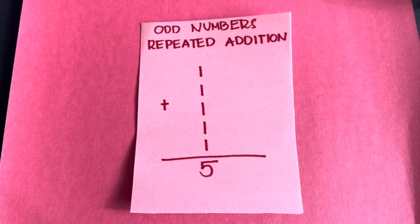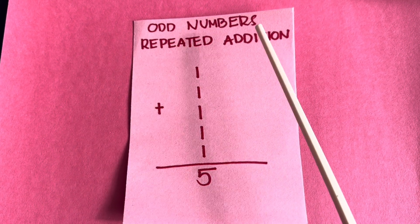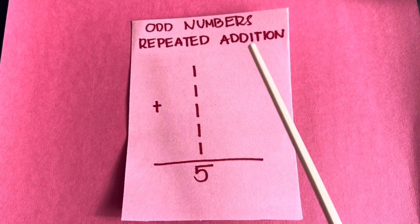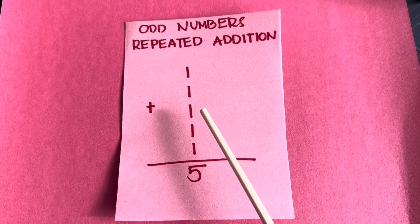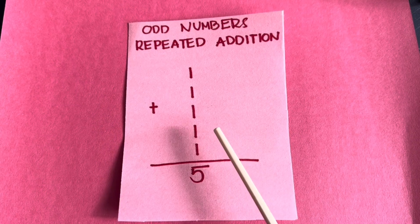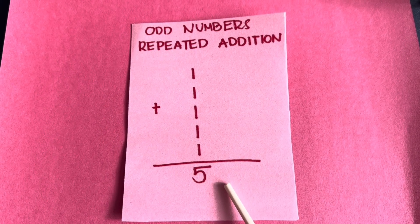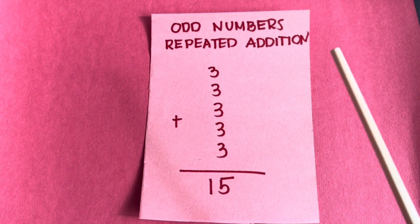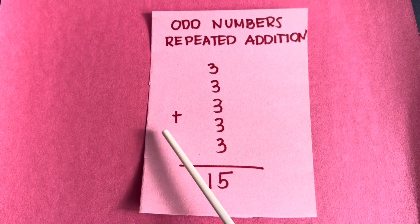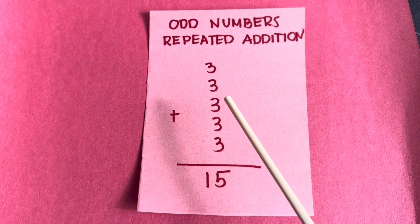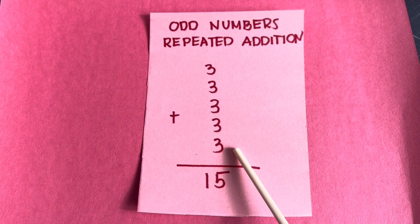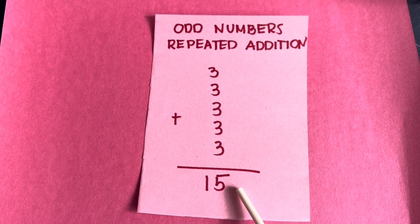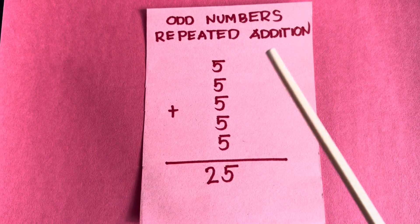Let's do a recap. Let's try add numbers repeated addition. 1 plus 1 plus 1 plus 1 plus 1 is equals to 5. Next is 3 plus 3 plus 3 plus 3 plus 3 is equals to 15. Here's another one.